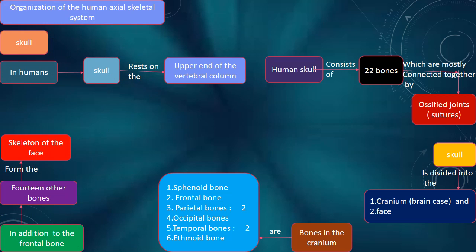Organization of the human axial skeletal system: the skull. In humans, the skull rests on the upper end of the vertebral column. The human skull consists of 22 bones which are mostly connected together by ossified joints called sutures.